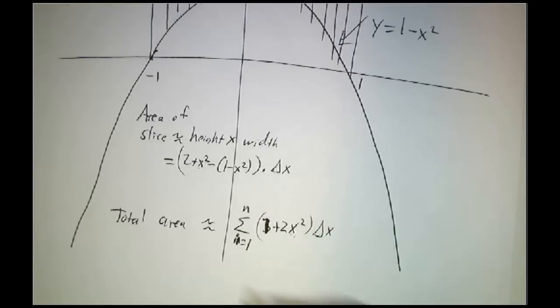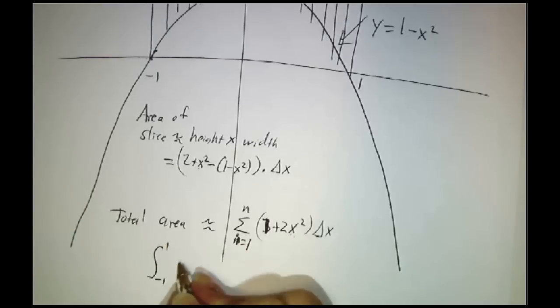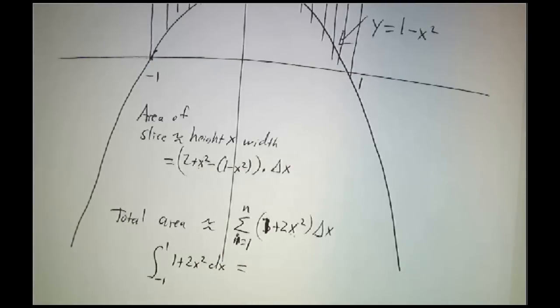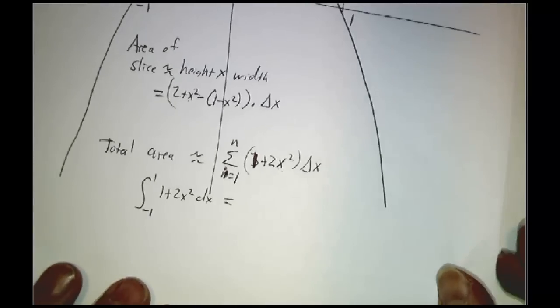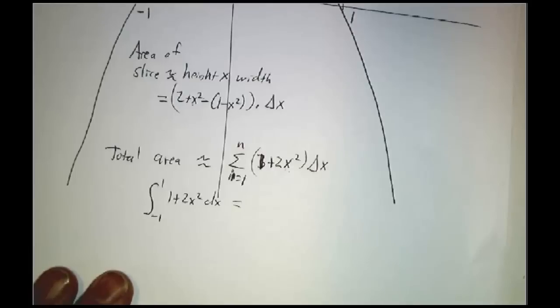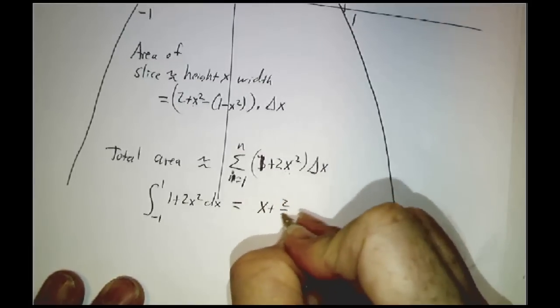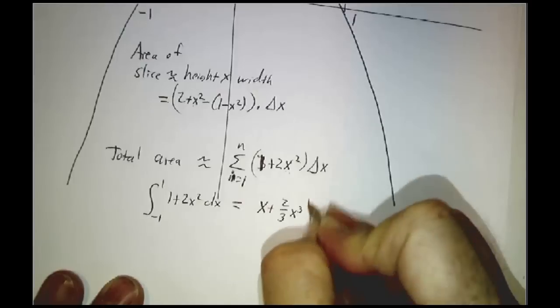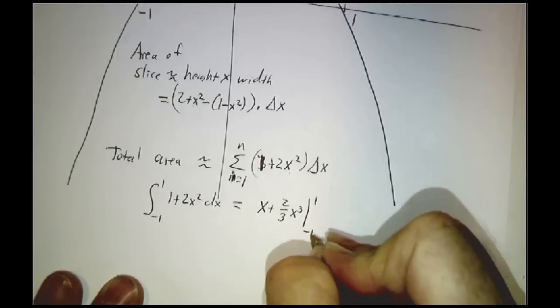And then in the limit, this becomes the integral from negative 1 to 1 of 1 plus 2x squared dx. Now, how do we actually evaluate that integral? Well, we use the fundamental theorem of calculus. We find a function whose derivative is 1 plus 2x squared. That's x plus 2/3 x cubed. And we evaluate it at 1 and at negative 1.